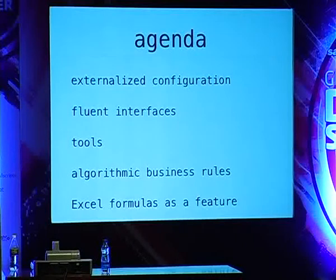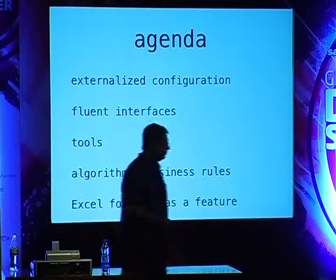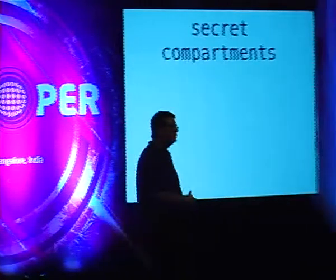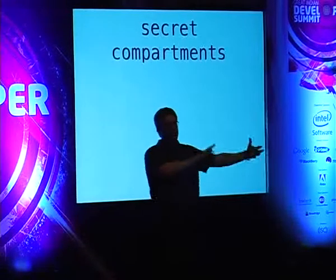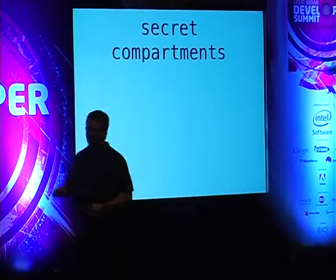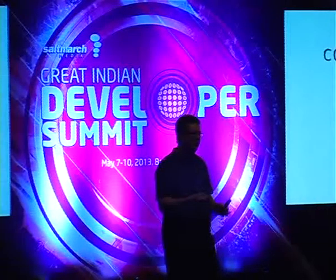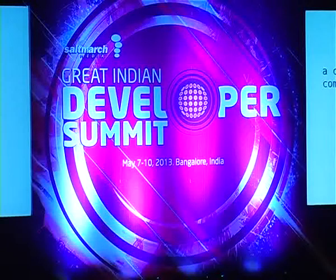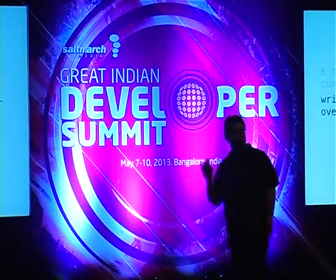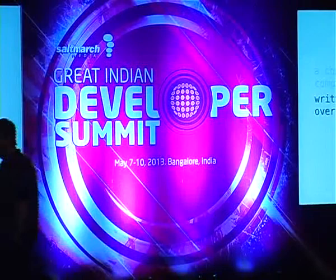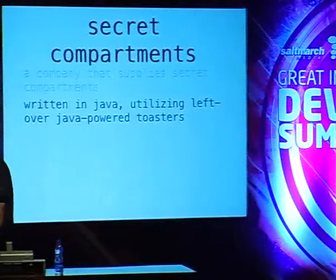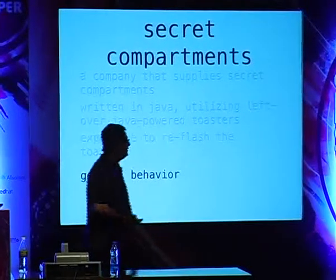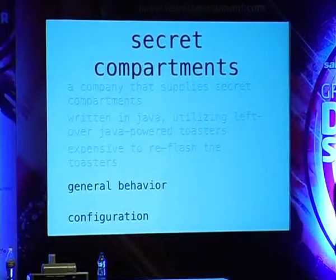Before I get into that, I want to motivate this problem just a little bit. This is actually the first example in Martin Fowler's DSL book. Let's say that you work for a company that sells and installs secret compartments — think James Bond-like. You may install a secret compartment where you close the door, turn on the light, and open the bedside table, and that triggers the secret compartment to open. You've got a really good deal on Java-powered toasters, and you want to use that as the hardware you install in people's houses. It's really expensive to reflash the toasters, so you want to code the general behavior onto them once and then supply configuration code that configures the details for a specific secret compartment.